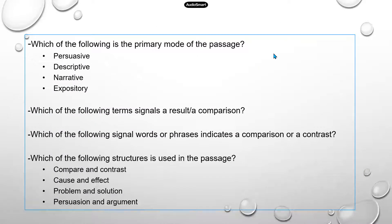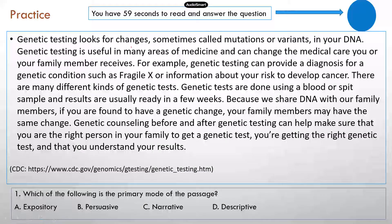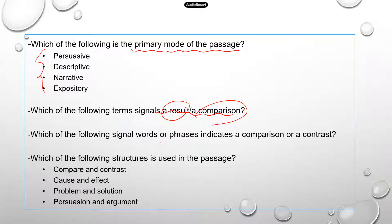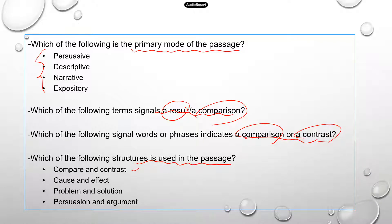These are the common types of questions you would see on TEAS for this topic. For instance: 'Which of the following is the primary mode of the passage?' — with four different options. Or: 'Which of the following terms signals a result or a comparison?' — if it's a result, that's cause and effect; if it's a comparison, that's compare and contrast. Or: 'Which signal words or phrases indicate a comparison or a contrast?' And: 'Which of the following structures is used in the passage?' — comparing, contrasting, cause and effect, problem/solution, or persuasion and argument.